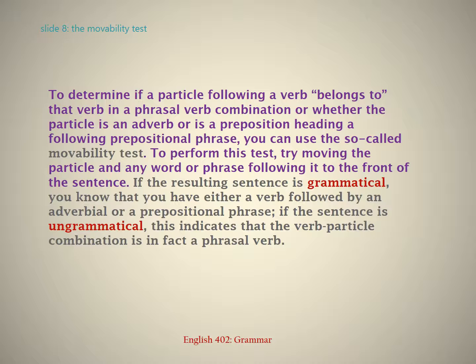To determine if a particle following a verb belongs to that verb in a phrasal verb combination, or whether the particle is an adverb or a preposition heading a following prepositional phrase, you can use the so-called movability test. To perform this test, try moving the particle and any word or phrase following it to the front of the sentence. If the resulting sentence is grammatical, you know that you have either a verb followed by an adverbial or a prepositional phrase. If the sentence is ungrammatical, this indicates that the verb-particle combination is in fact a phrasal verb.